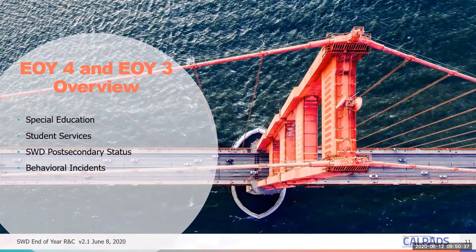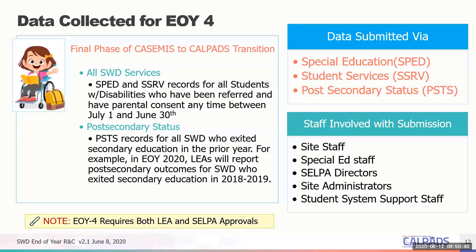Let's do a short overview of end of year four and three before we go into detail. The data collector for end of year four is called the final phase of the CASEMS transition. However, that's not necessarily true because the transition is probably going to take an additional year. This was the implementation year with all new functionality seen in 10 years of working in CALPETS. The student with disability program and services record — the SPED and the SSRV — must be submitted for end of year four, in addition to the students' post-secondary status for those who exited secondary education in the 2018-19 year.